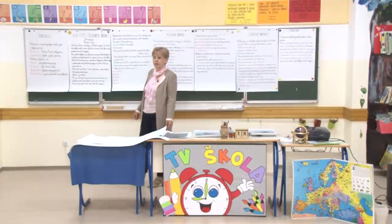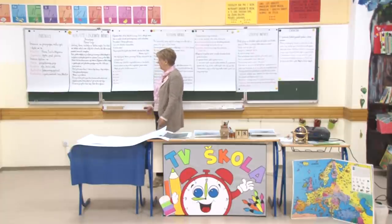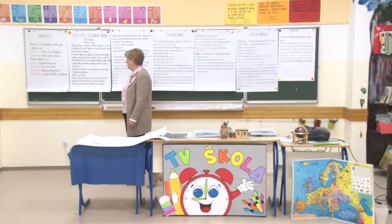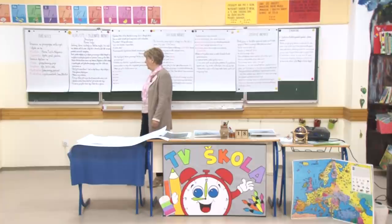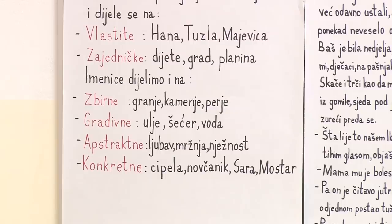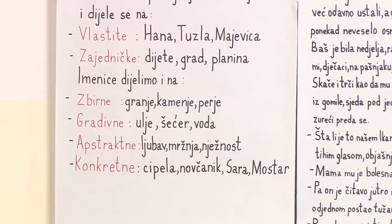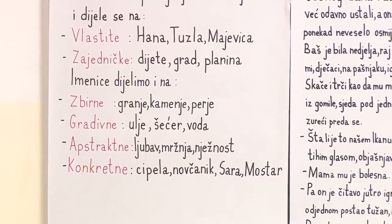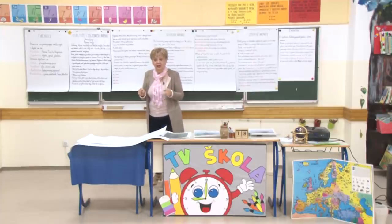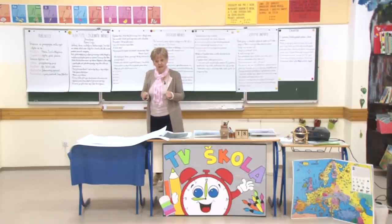Zbirne imenice: granje, kamenje, perje. Gradivne imenice: ulje, šećer, voda. Imenice dijelimo na abstraktne i konkretne. Konkretne pokazuju nešto konkretno, opipljivo, dokazivo. A imamo i one koje su abstraktne, pa se dešavaju negdje u glavama - ne možemo ih ni opipati, ni dodirnuti.